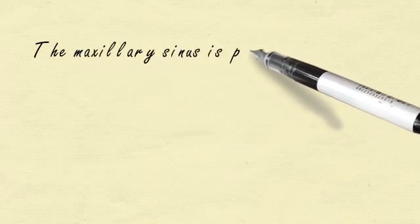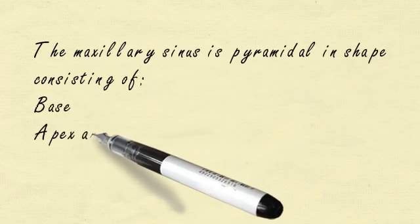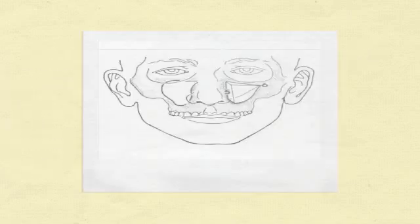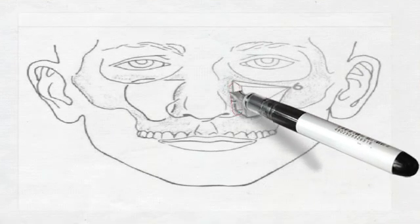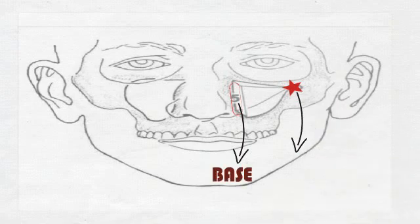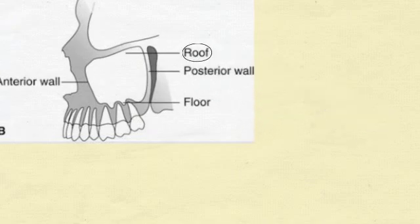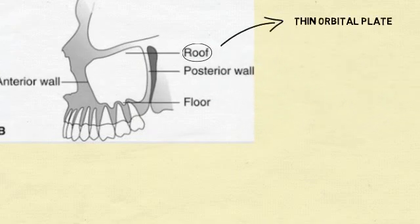The maxillary sinus is pyramidal in shape and has a base, apex, and four sides. The base is formed by the lateral wall of the nose. The apex projects laterally into the zygomatic process of the maxilla and may overextend to the zygomatic bone when the sinus is large. The roof is formed by the thin orbital plate.